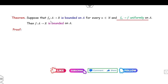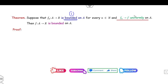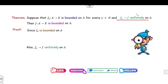Now the main result: this is a very important theorem. If the sequence fn is bounded and fn converges to f uniformly, then f is also bounded. The proof depends only on these two things: boundedness and uniform convergence. From boundedness, there exists a real number M such that |fn(x)| ≤ M for all x in the domain A.